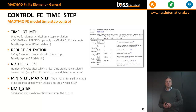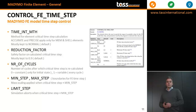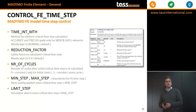Another element is called control FE timestep. In this element, we have several parameters that determine the finite element timestep used in the calculation. We have the time integration method and the reduction factor, which is basically a safety factor on your critical timestep. We also have the attribute number of cycles, which can be set to zero or one. When set to zero, you calculate with a constant FE timestep. When set to one, the critical timestep is determined at every cycle, meaning your timestep can vary over the simulation.